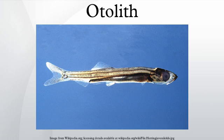An otolith, also called statoconium or otoconium, is a structure in the saccule or utricle of the inner ear, specifically in the vestibular labyrinth of vertebrates. The saccule and utricle together make the otolith organs.